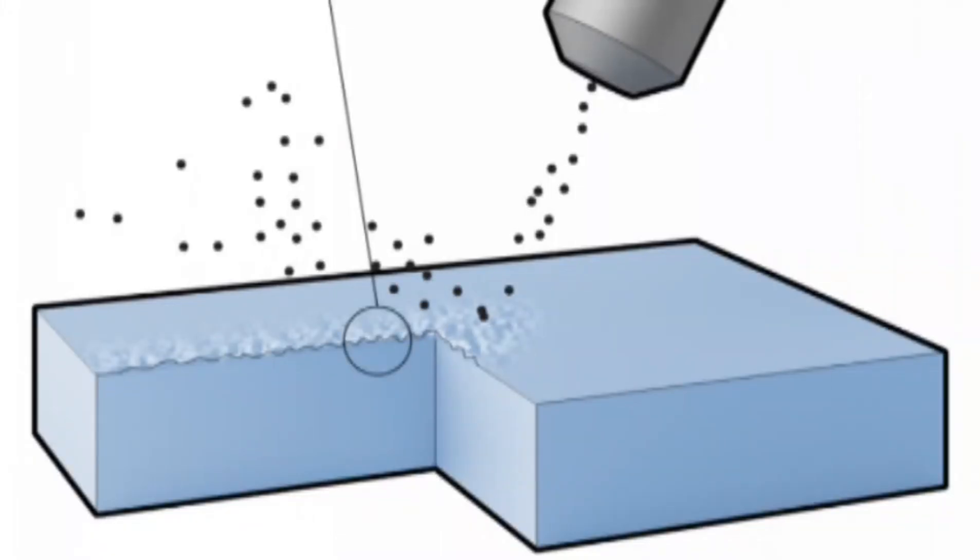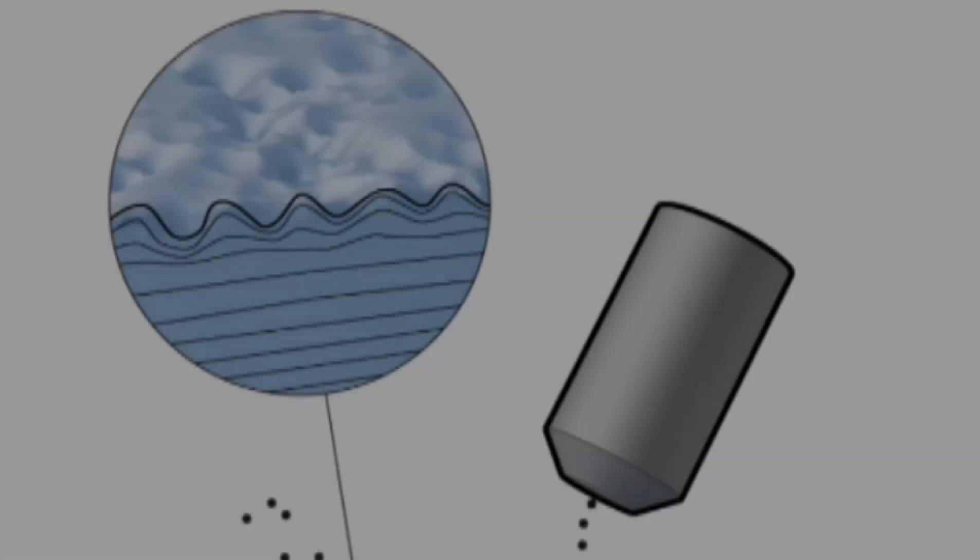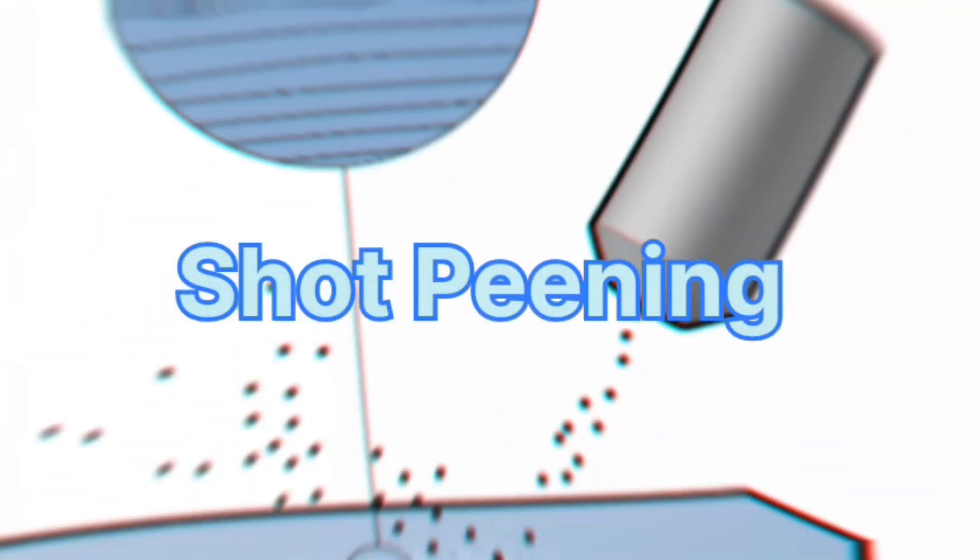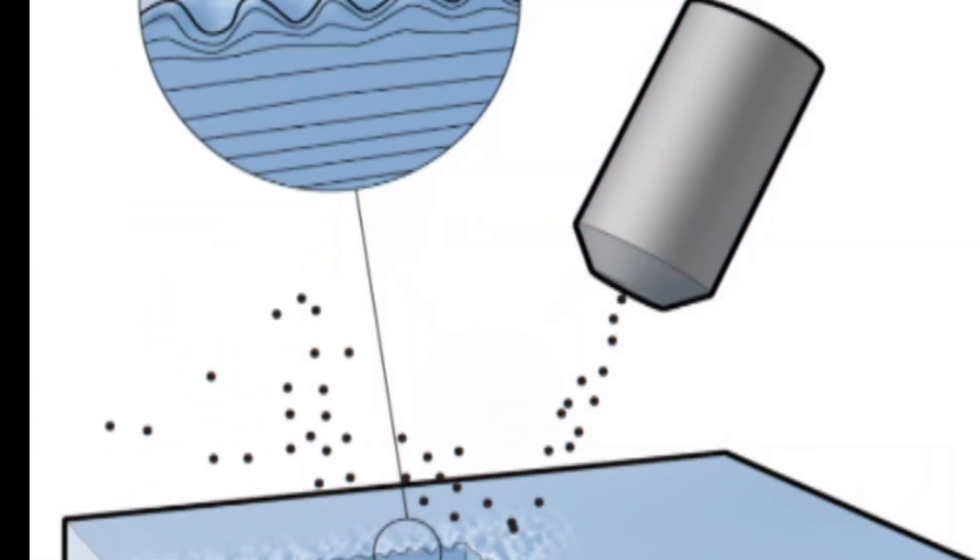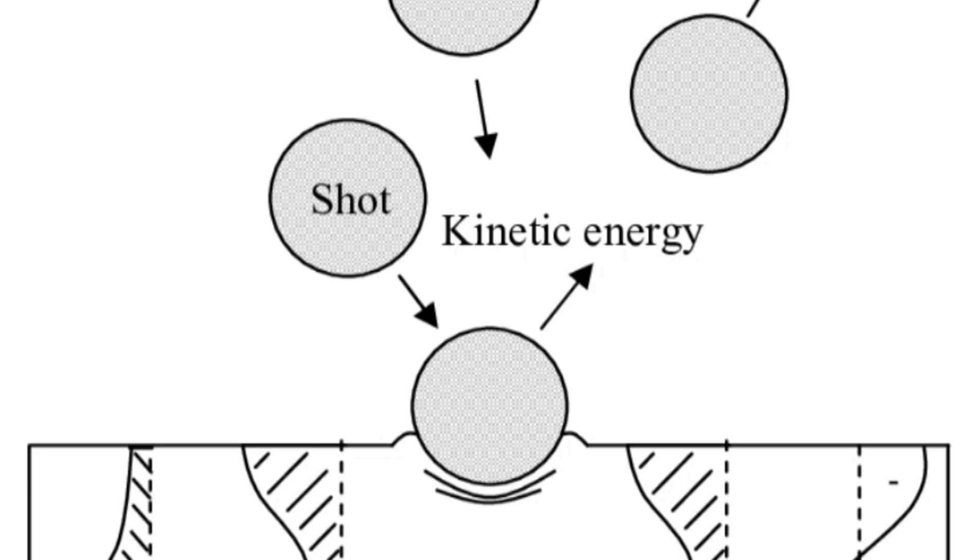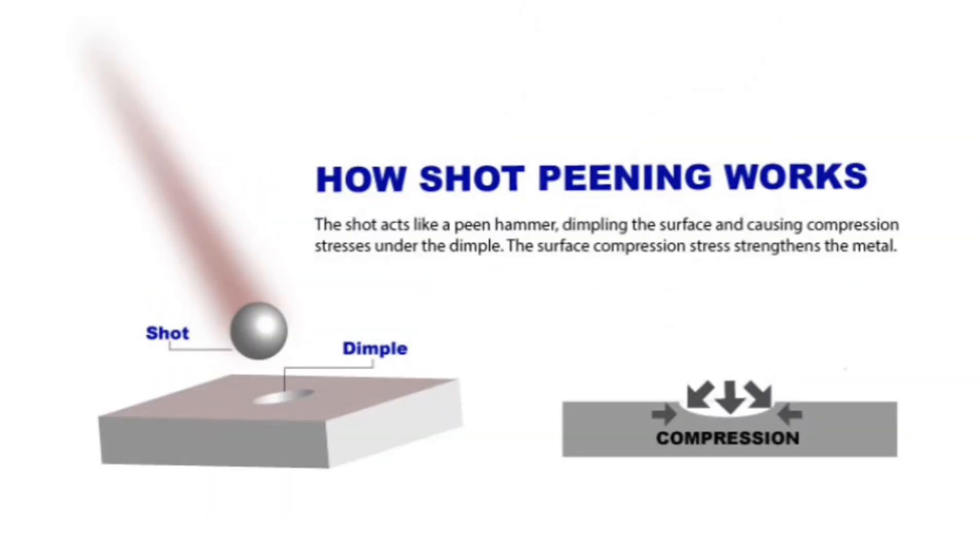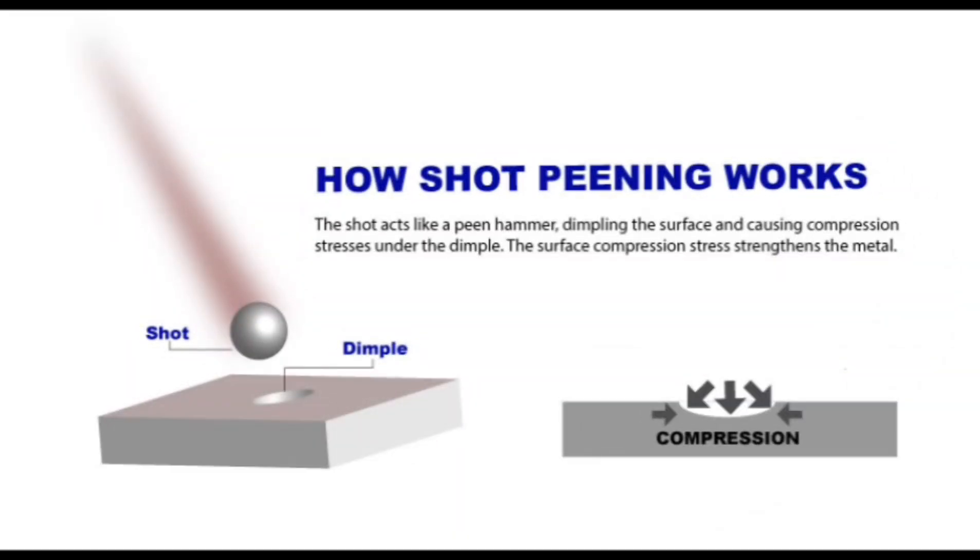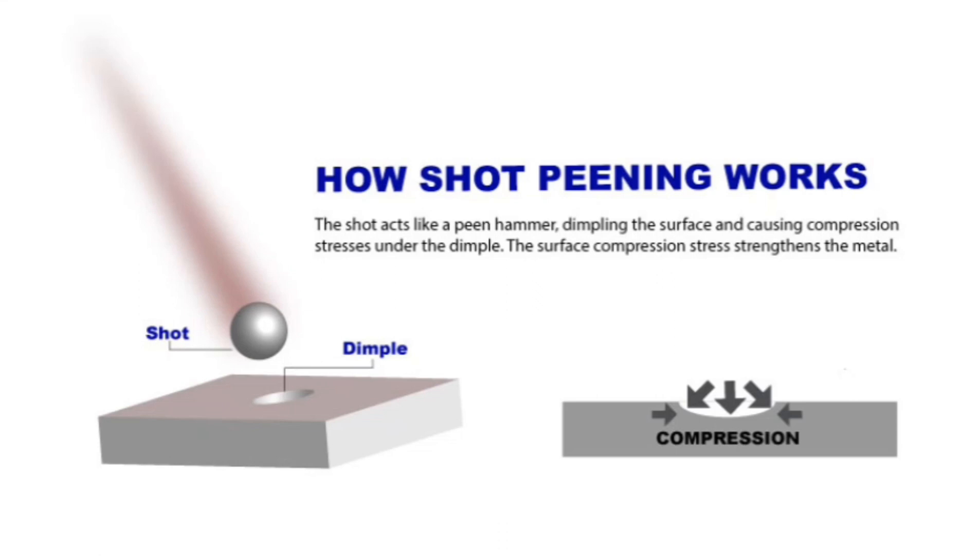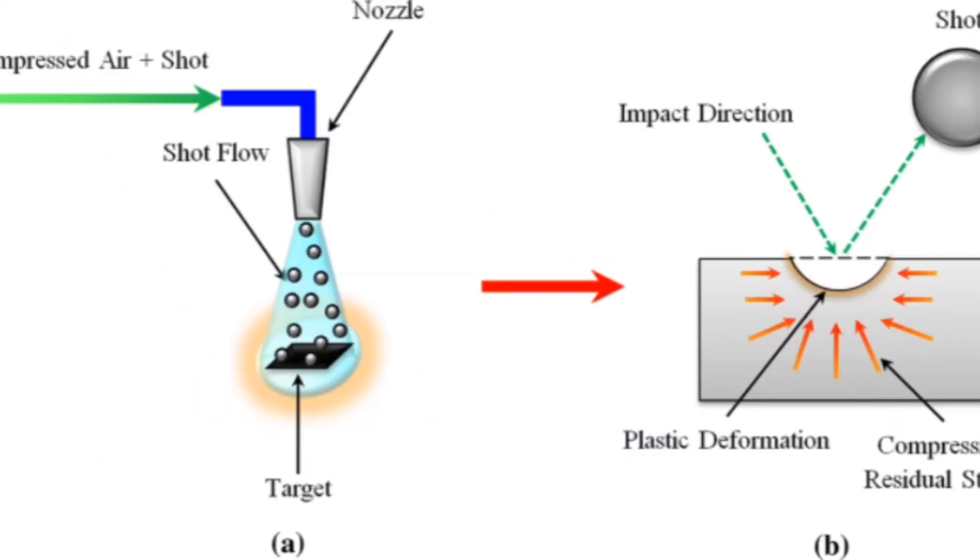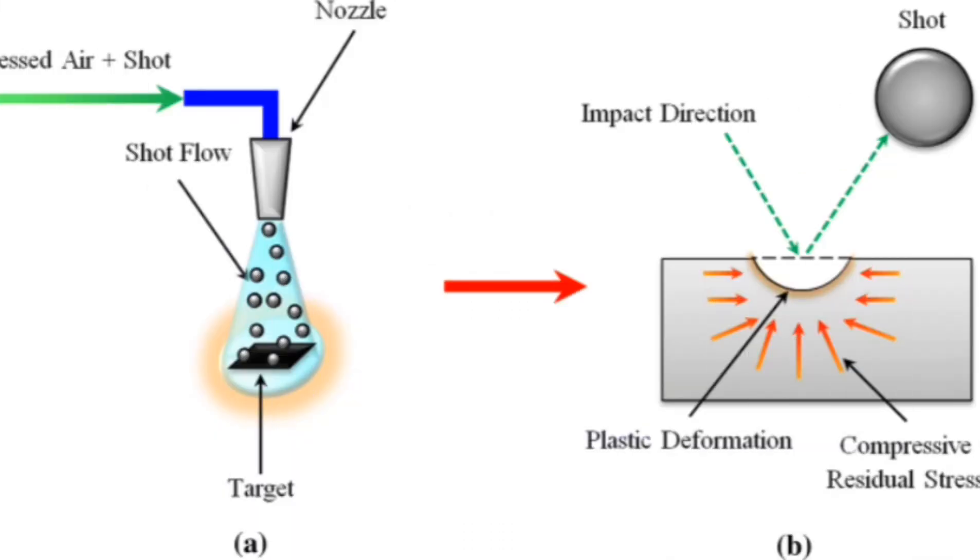There are many types of pinning in welding. Shot pinning uses small, high-velocity shots, usually metallic beads, that are directed at the weld surface. This induces plastic deformation, creating a layer of compressive stress that improves fatigue resistance.